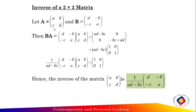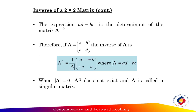How do we calculate the inverse of a 2 by 2 matrix? Let matrix A equal [a, b; c, d] and let B equal [d, -b; -c, a]. Then B times A equals the identity matrix. Hence, the inverse of matrix [a, b; c, d] is 1 over (ad - bc) multiplied by the matrix [d, -b; -c, a]. The expression ad minus bc is the determinant of matrix A.